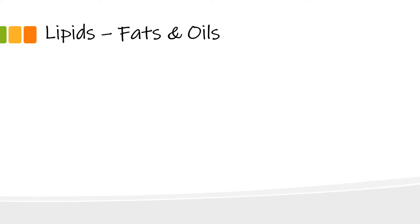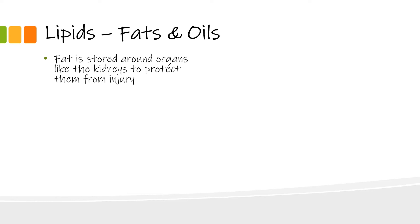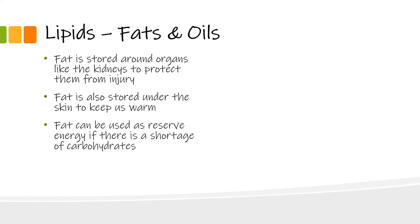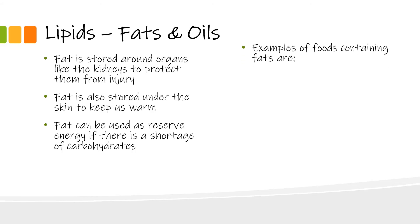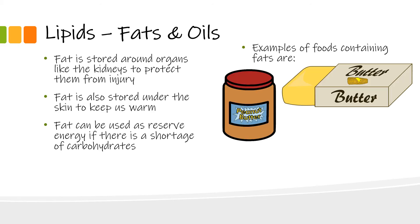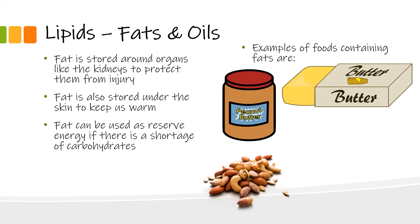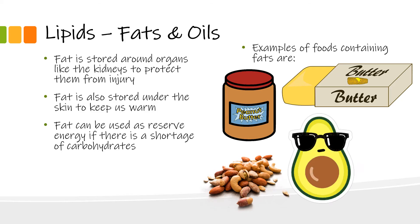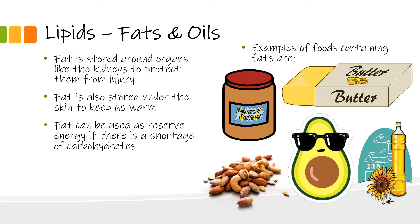Next we will be looking at lipids. Lipids are fats and oils. Fat is stored around organs like the kidneys to protect them from injury. Fat is also stored under your skin to keep us warm, and can be used as reserve energy if there is a shortage of carbohydrates. Examples include peanut butter, butter, nuts, avocado, and cooking oil.